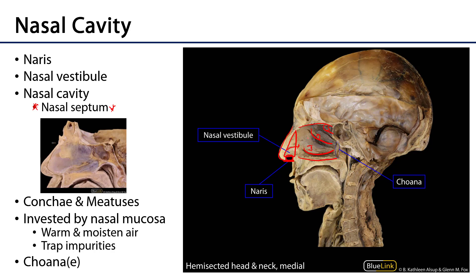The nasal septum consists of three elements, which we can see here. Anteriorly, we have the septal cartilage. Posterior-inferiorly, we have the vomer — vomer meaning plowshare, because it's shaped like a plow. And then there is the perpendicular plate of the ethmoid bone.